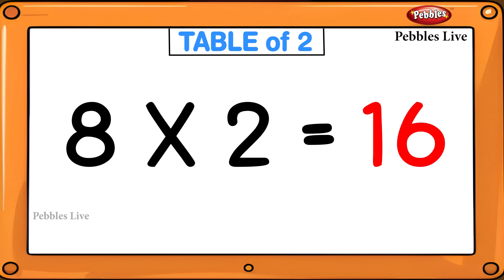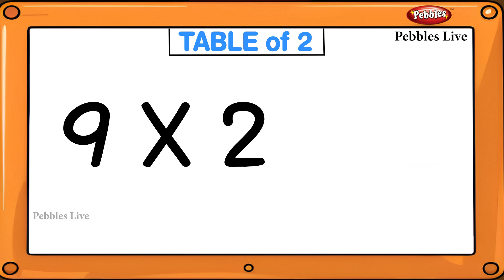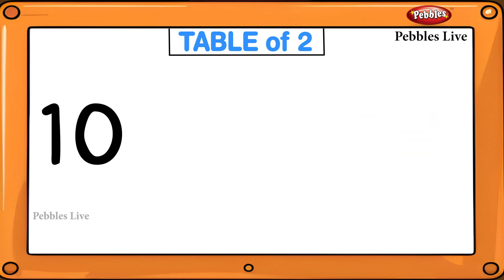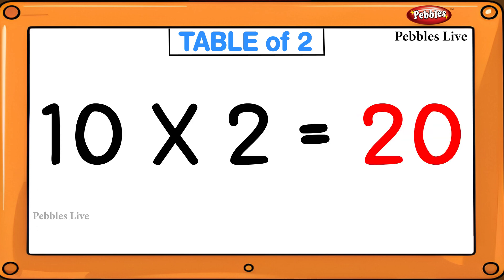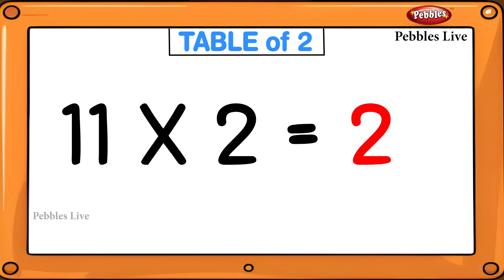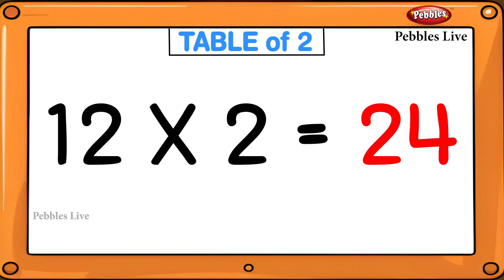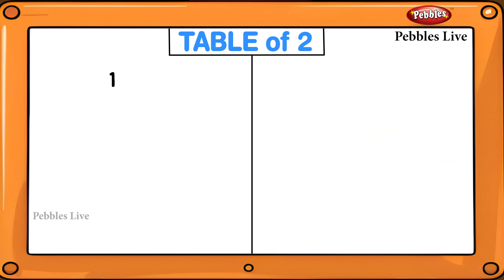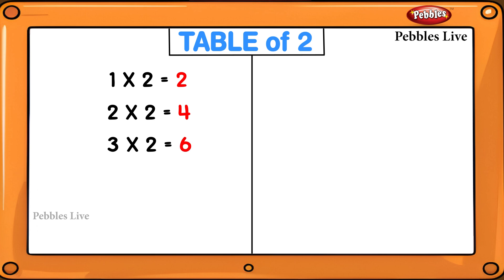8 twos are 16, 9 twos are 18, 10 twos are 20, 11 twos are 22, 12 twos are 24. 1 twos are 2, 2 twos are 4, 3 twos are 6, 4 twos are 8, 5 twos are 10.